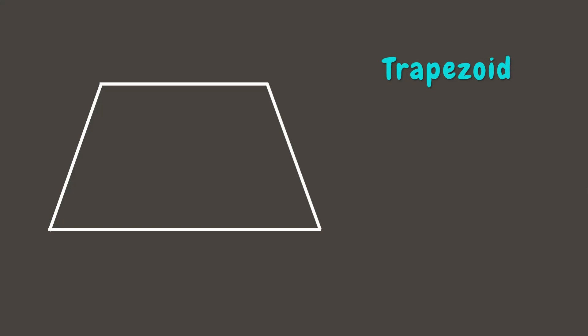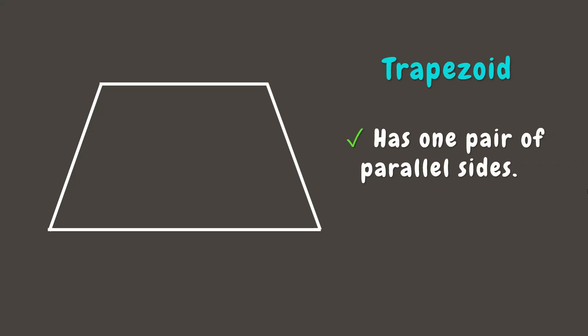Now let's try changing the measure of only one side and an angle. There — we have formed a trapezoid. A trapezoid is a quadrilateral with only one pair of parallel sides, which is different from the other quadrilaterals we have learned that have two pairs of parallel sides. Here we can see that the top and bottom sides of this figure are parallel to each other.